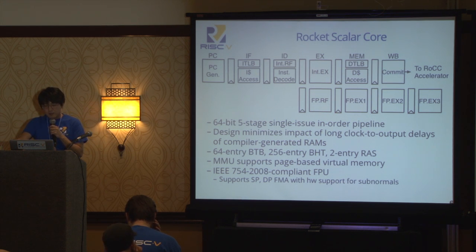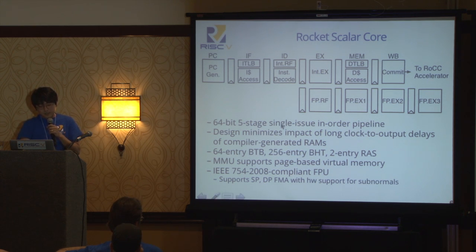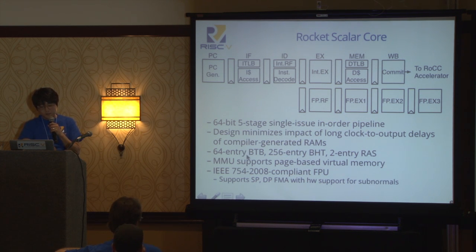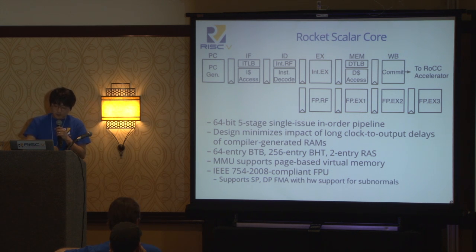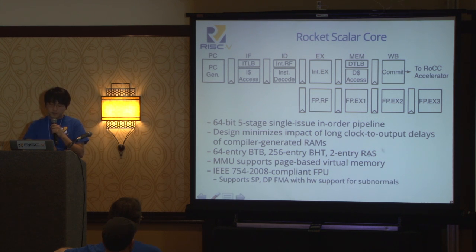Some interesting things about the Rocket scalar core: we designed it carefully to minimize the impact of long clock-to-queue output delays from compiler-generated RAMs. To mitigate this, we moved branch resolution to the memory stage, which increases branch resolution latency but is mitigated by branch prediction. We deploy a 64-entry BTB, a 256-entry branch history table, and a two-entry return address stack — all these numbers are tunable. There's also an MMU supporting page-based virtual memory. All instruction and data caches are virtually indexed, physically tagged. The core also supports instantiation of an IEEE 754-2008 compliant FPU with single and double precision FMA, fused multiply-adds, and hardware support for subnormals.